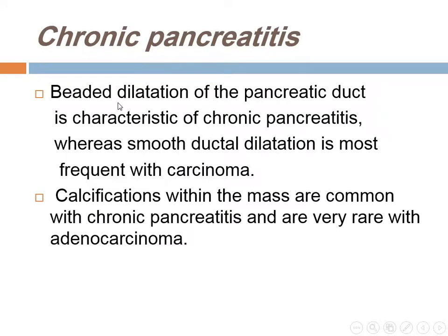In chronic pancreatitis, beaded dilatation of the pancreatic duct is characteristic, while smooth duct dilatation is most frequent with carcinoma. Calcification within the mass is common with chronic pancreatitis and very rare with adenocarcinoma, although adenocarcinoma can arise in a background of chronic pancreatitis in 50% of cases. Islet cell tumors also frequently calcify.